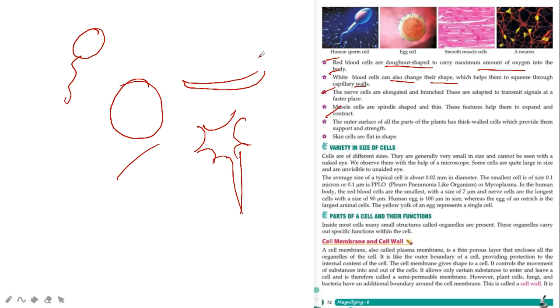The outer surface of all parts of the plants has thick walled cells which provide them support and strength. Skin cells are flat in shape.